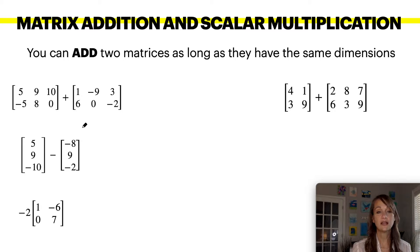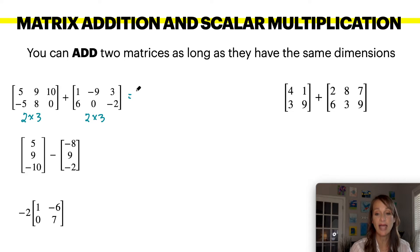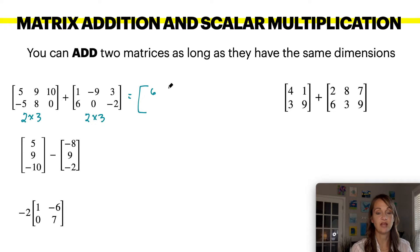You are allowed to add matrices as long as they have the exact same dimension. For example, this is a two by three matrix and this is also a two by three matrix, which means you can add them together. You will add each entry together: five plus one is six, nine plus negative nine is zero, ten plus three is 13, negative five and six is one, eight and zero is eight, zero and negative two is negative two.